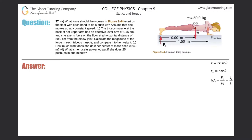Problem 37, letter A: what force should the woman in figure 9.44 exert on the floor with each hand to do a push-up? Assume that she moves at a constant speed. To understand the mechanics of a push-up, the axis of rotation is essentially where your toes articulate with the ground. We can think of this as a rigid body — proper form has your body as a rigid bar.